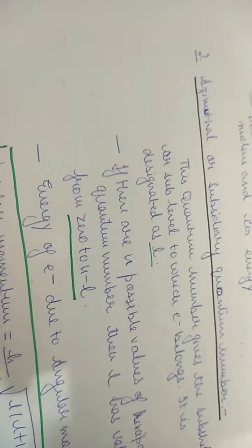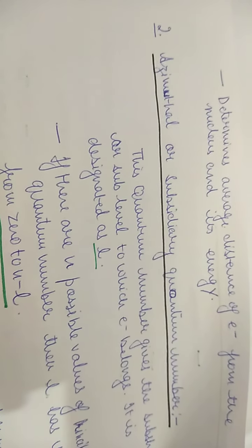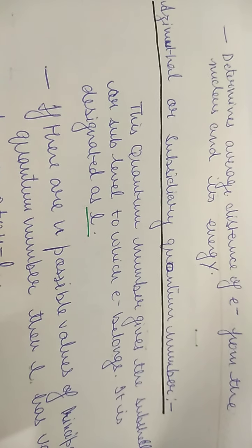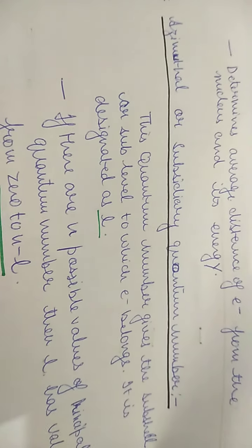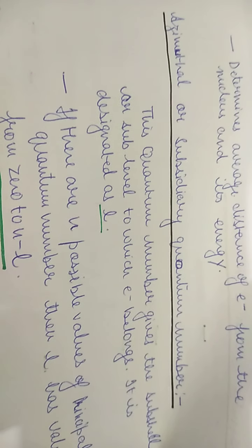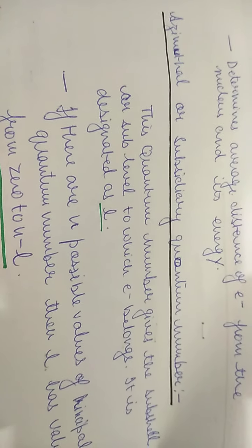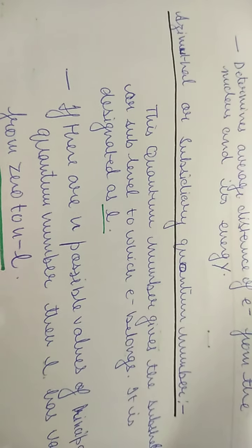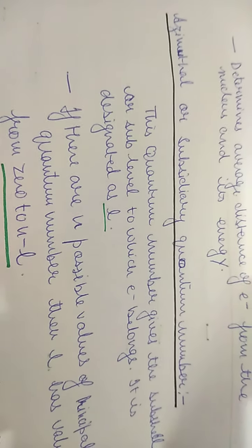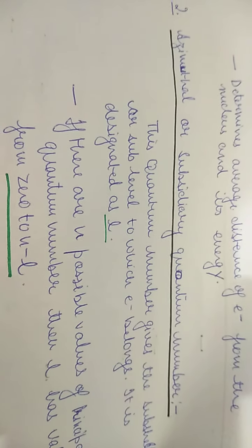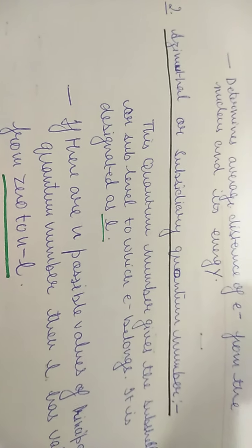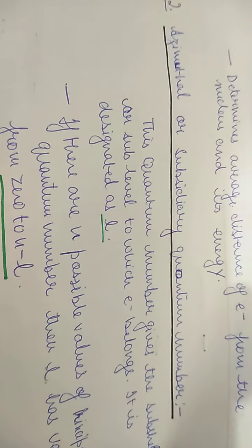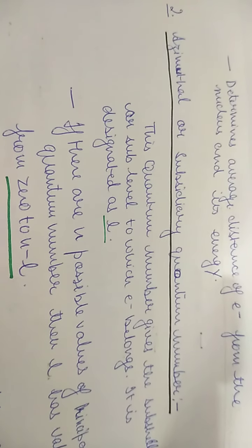The principal quantum number also determines the average distance of the electron from the nucleus and its energy. By knowing which shell the electron is in, you can predict the distance from the nucleus and the energy. For example, if the electron is in the 1S orbital, its energy will be the lowest. For higher principal quantum numbers — 2S, 3S, 4S — the energy increases.